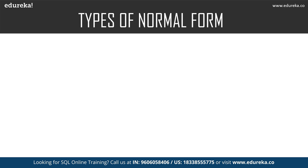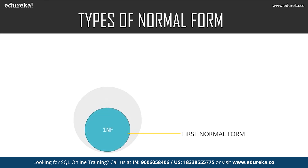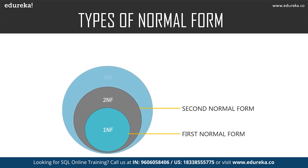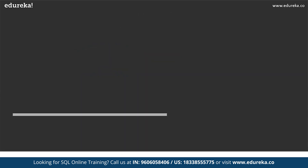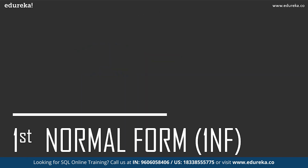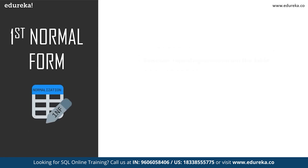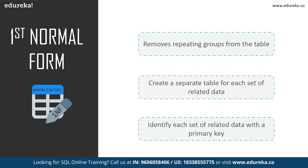There are many normal forms still under development, but let's focus on the basic and essential ones: first normal form, second normal form, third normal form, and Boyce-Codd normal form. Let's proceed to first normal form. In first normal form, we tackle the problem of atomicity — atomicity means values in the table should not be further divided. In simple terms, a single cell cannot hold multiple values.